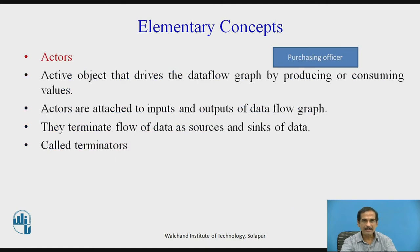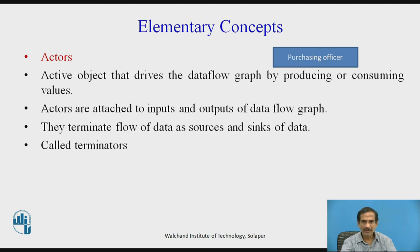The next concept is actors, which are a shaded rectangle. For example, a purchasing officer might be an actor. This active object drives the data flow by producing or consuming values. Actors are attached to the inputs and outputs of the data flow graph and terminate the flow of data as sources and sinks of data.